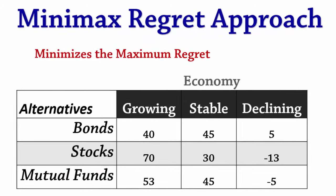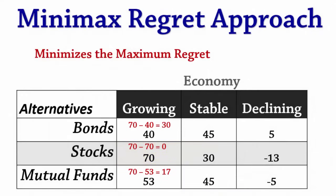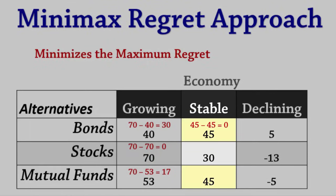For example, if the economy is growing, the best payoff is 70. If we happen to have invested in bonds, then the regret will be 70 minus 40, which is 30. If we invested in stocks, then there is no regret. If we invested in mutual funds, then the regret is 70 minus 53, which is 17. Again, if the economy is stable, the best payoff is 45. So if we invested in bonds, there is no regret. The regret is 45 minus 30 if we invested in stocks. If we invested in mutual funds, there is also no regret.